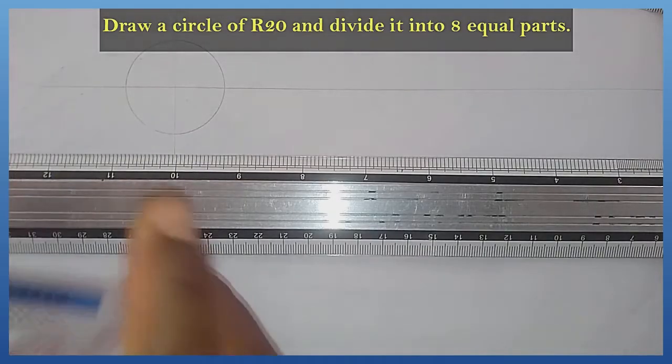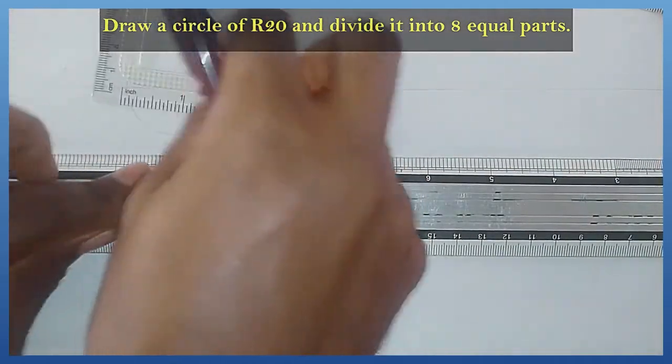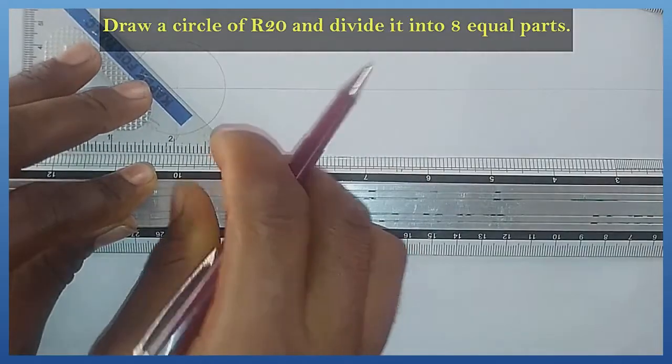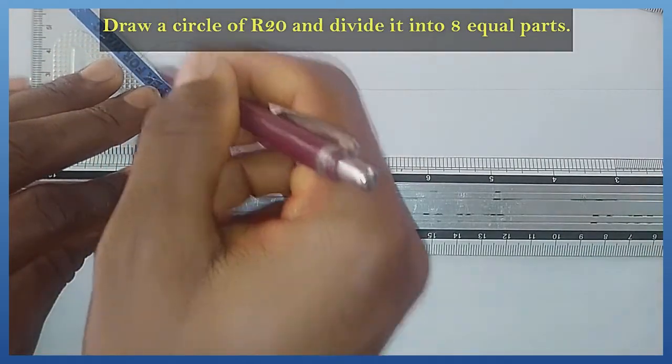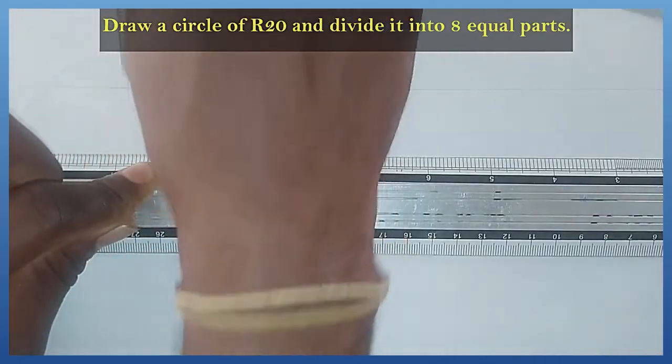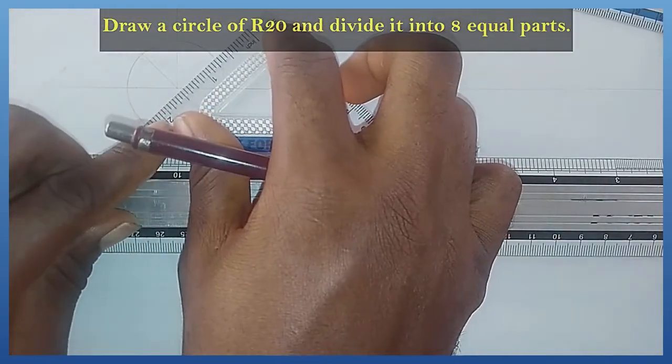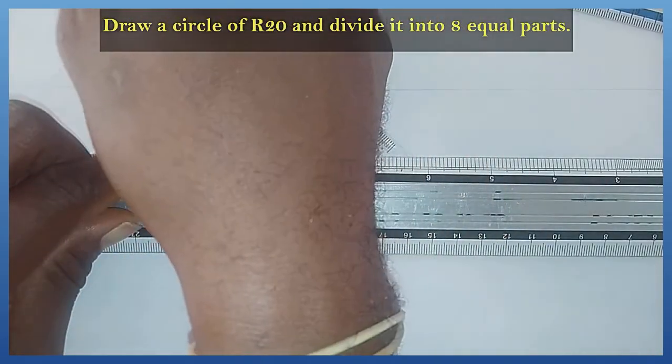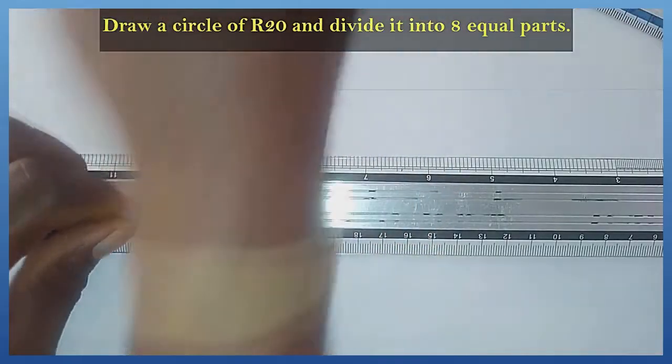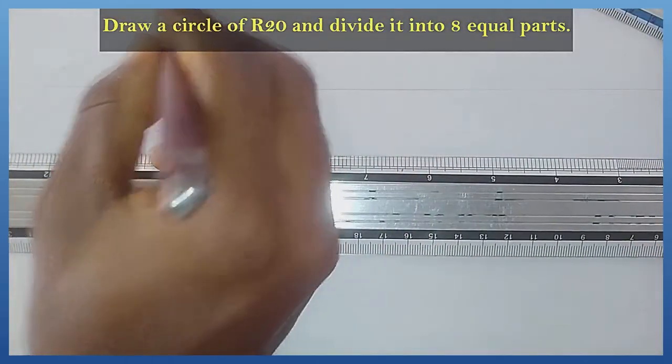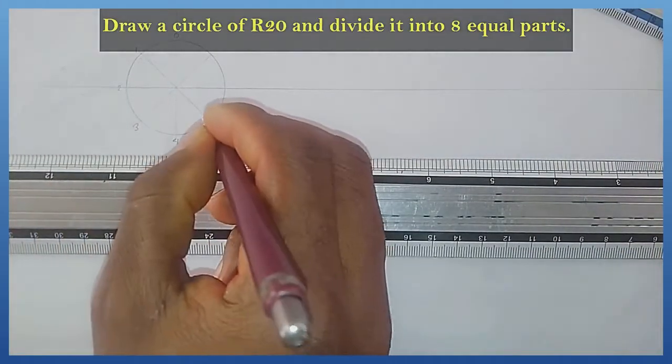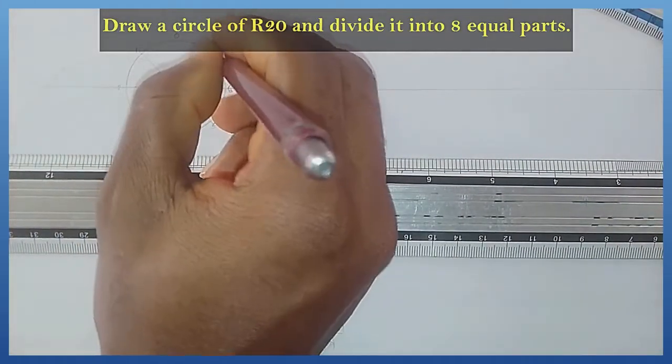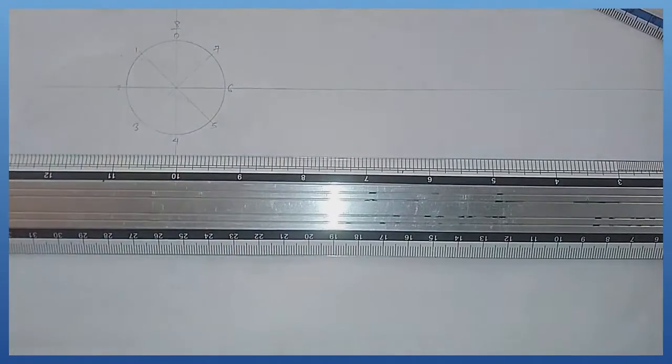I can make use of my 45 degree set square to do that. I'm going to denote it 0, 1, 2, 3, 4, 5, 6, 7, 0 over 8. After doing that, the next thing is to draw tangents.